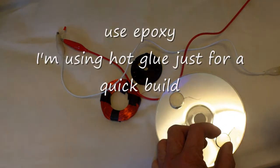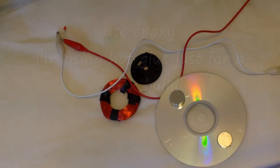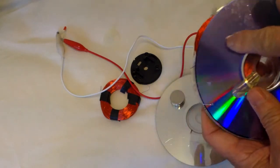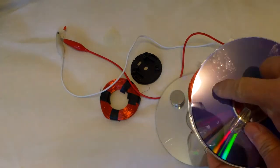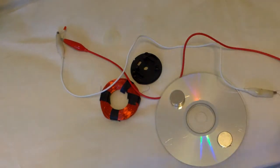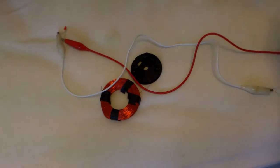and about midway between the center and the edge of the CD. Because this is where the coil is, you want the center of the magnet to pass over the center of the coil. So